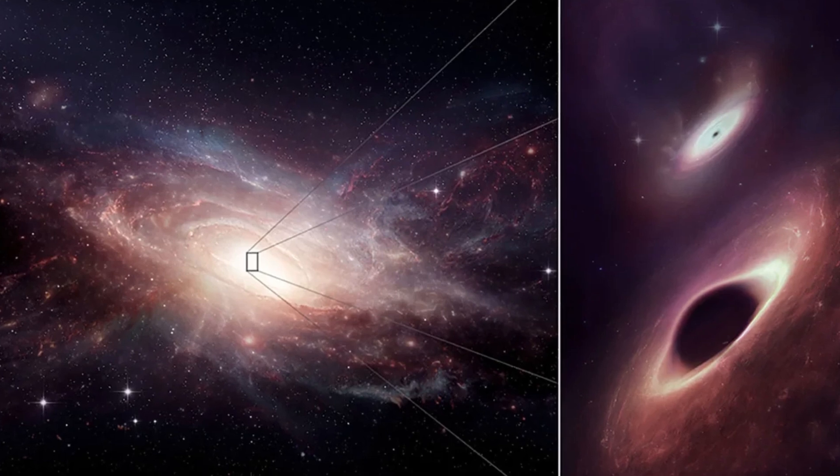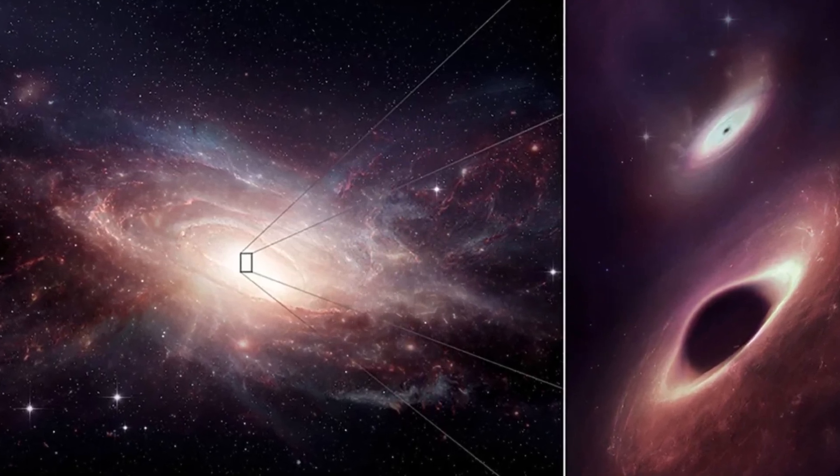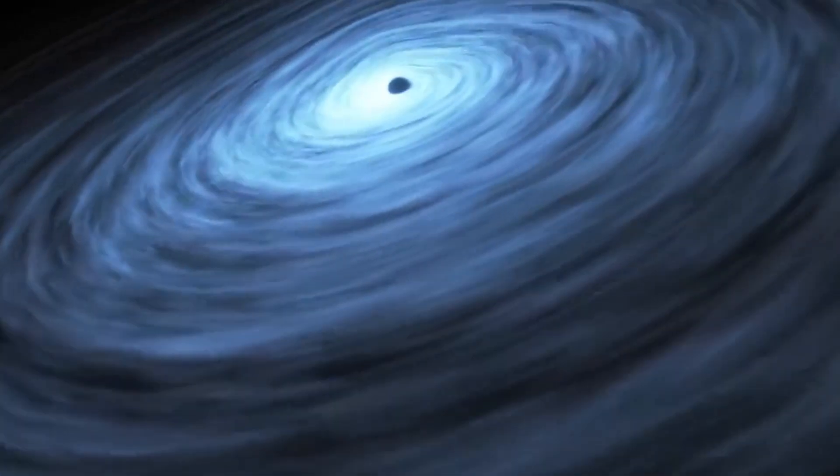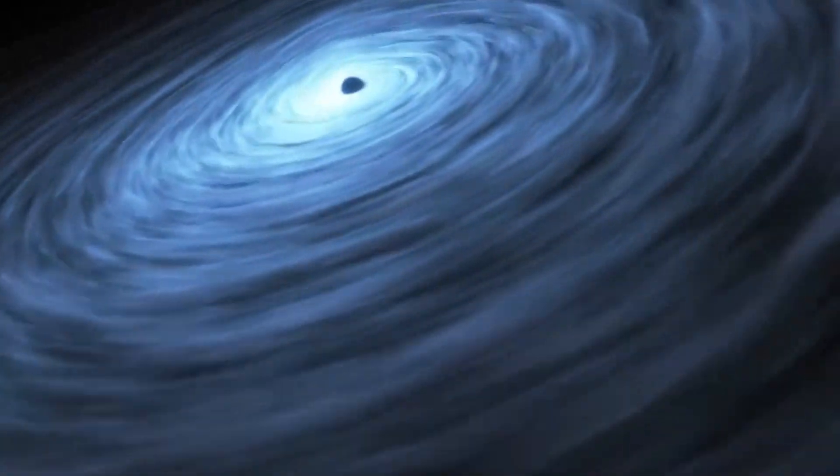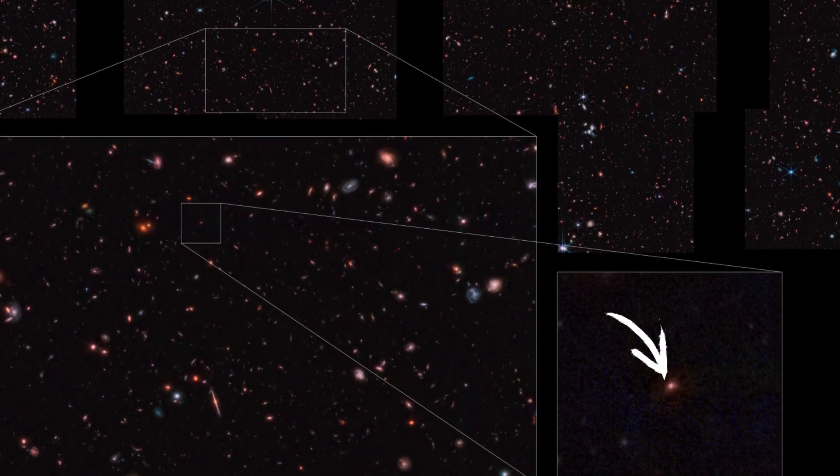Visually, CEERS 1019 appears as three bright clumps, not a single circular disk, suggesting that a galaxy merger could be partly responsible for fueling the activity in this galaxy's black hole. The CEERS survey is expansive, and there's a lot more to explore.